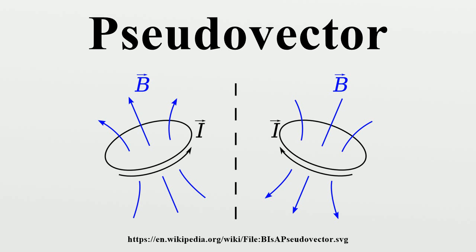Regarding the right-hand rule: pseudo-vectors have been discussed using active transformations. An alternate approach, more along the lines of passive transformations, is to keep the universe fixed but switch the right-hand rule with the left-hand rule everywhere in math and physics, including in the definition of the cross-product. Any polar vector would be unchanged, but pseudo-vectors would switch signs. Nevertheless, there would be no physical consequences, apart from in parity-violating phenomena such as certain radioactive decays.